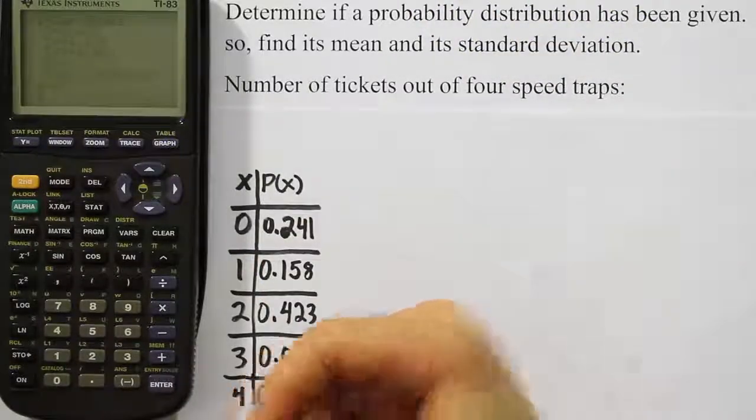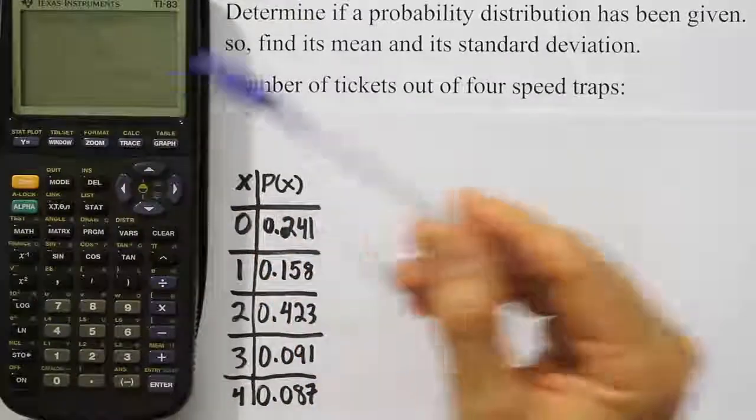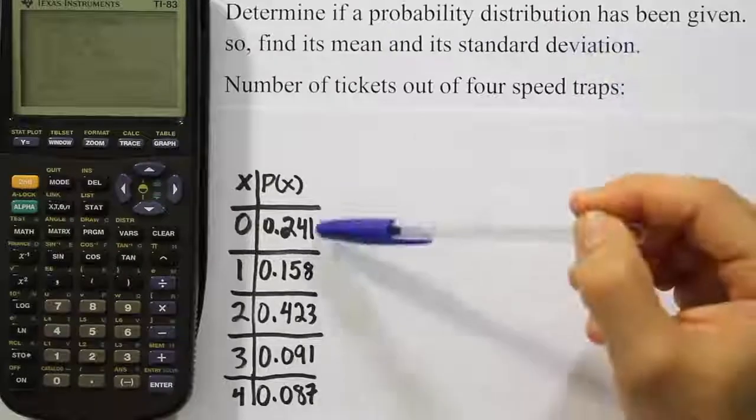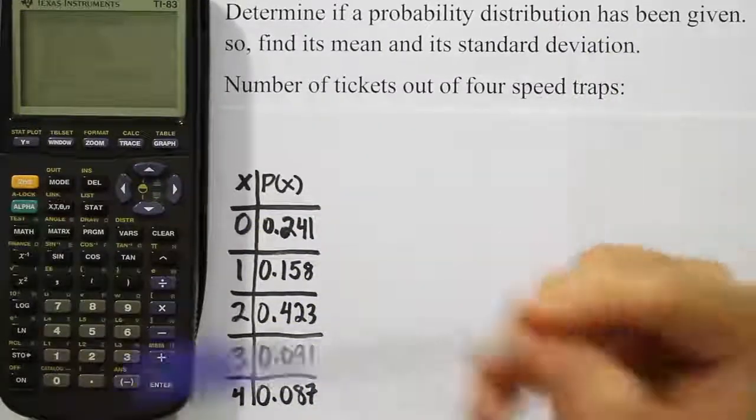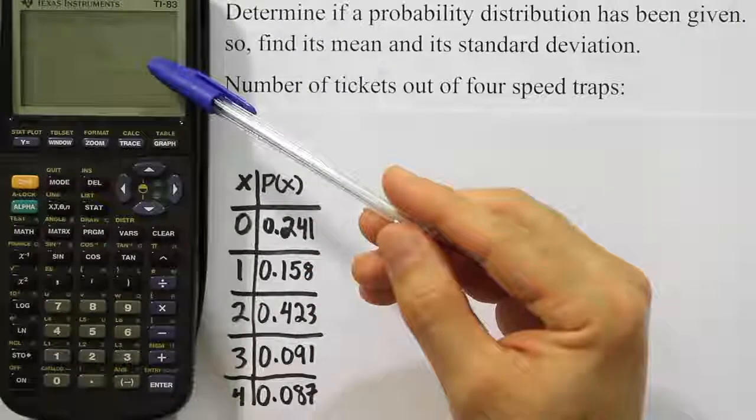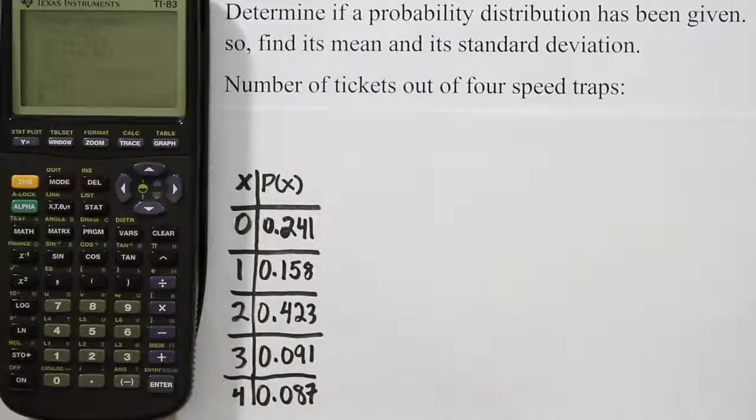And that will show up in the calculator as n equals 1. And if the calculator sees that that's 1, it will give you this as the population standard deviation because it knows that you have all the probability and all the possible outcomes. So it gives you the population standard deviation, which is correct, and the mean, which is 1.625 in this case. And that's it.